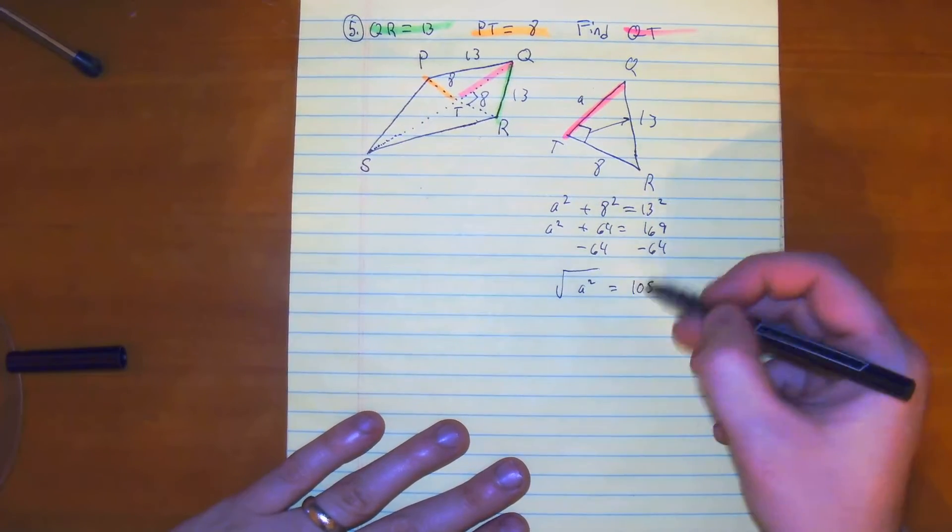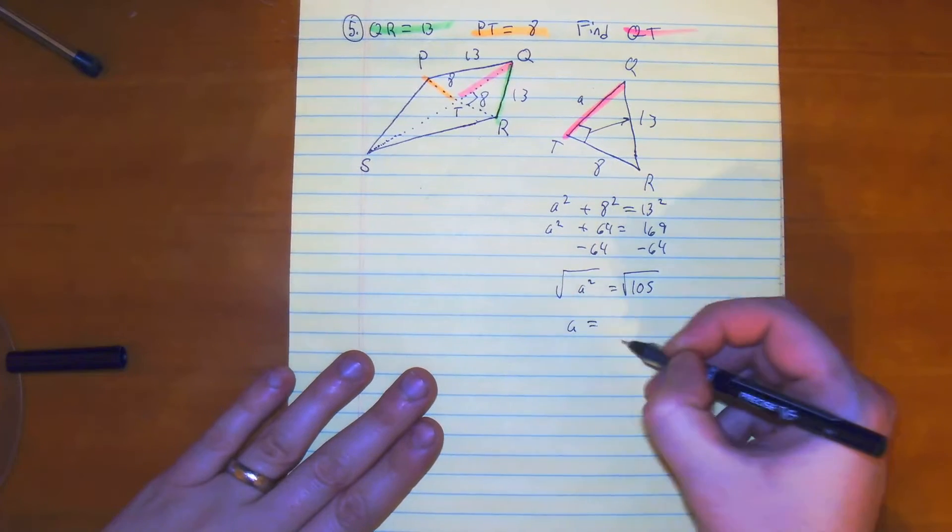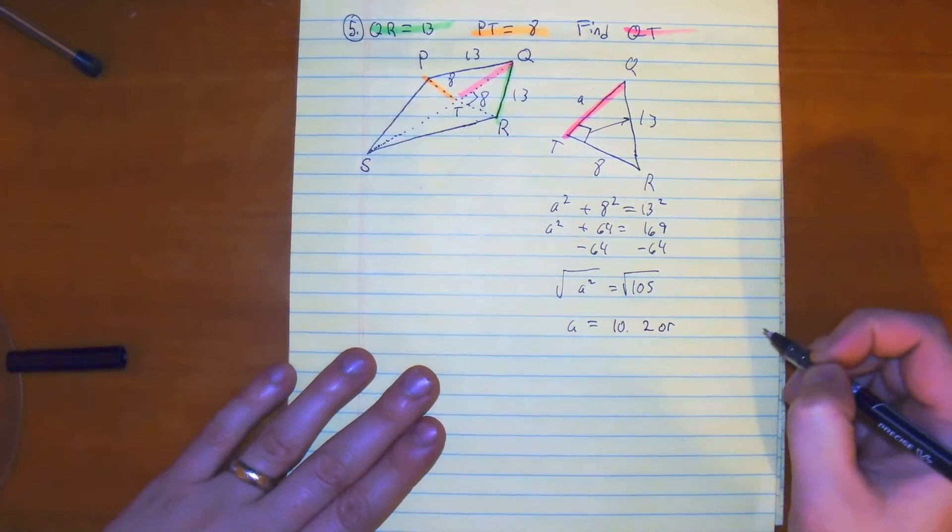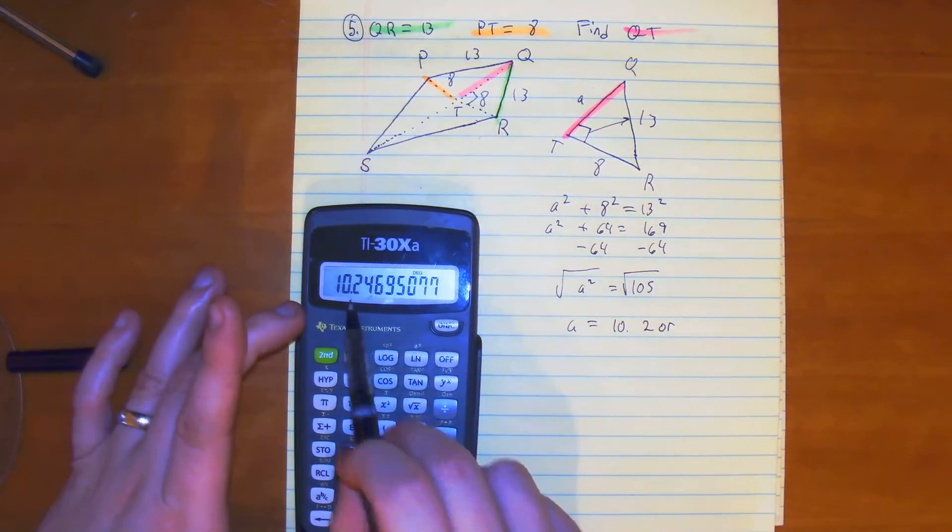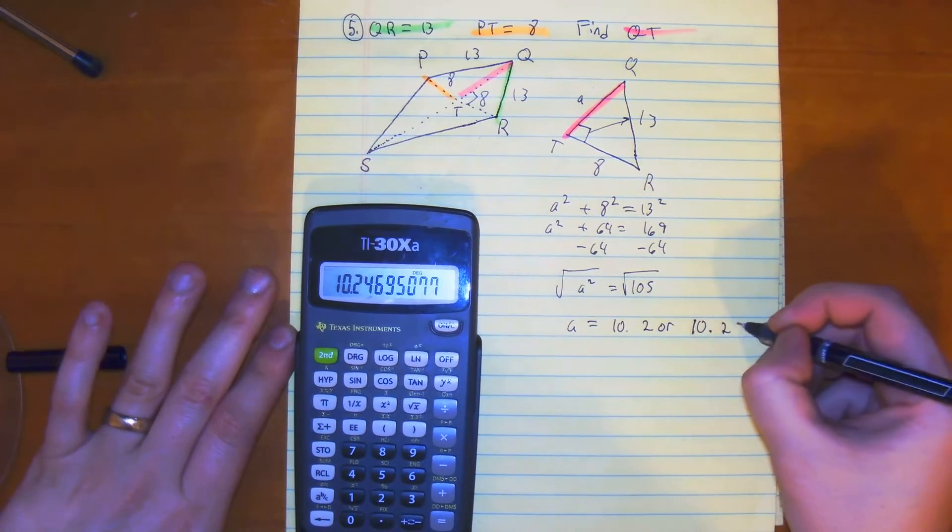We square root both sides, and you get a is equal to 10.2. Or if you want to round to the hundredth place, as you can see, it's about 10.2 or you could say it's 10.25.